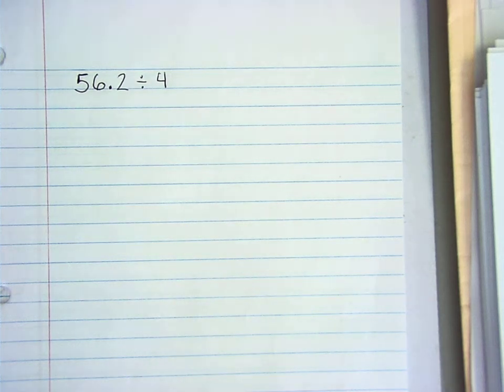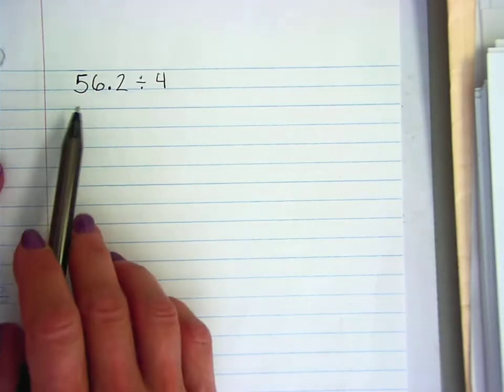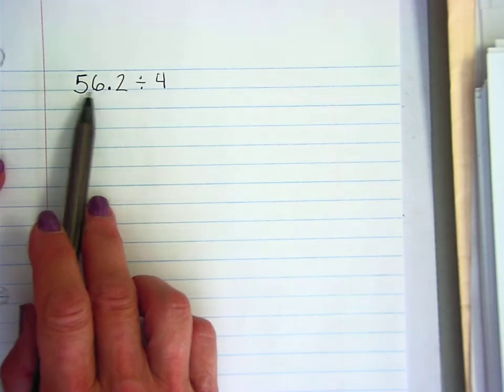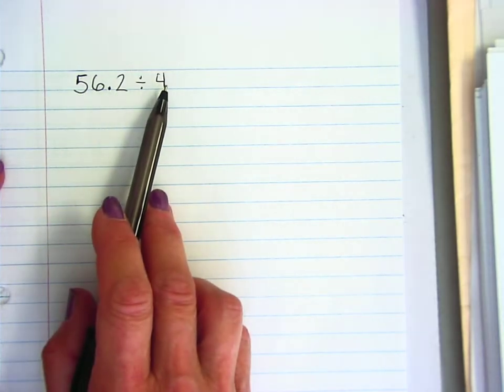Today, I'm going to demonstrate how to use the box method to divide a decimal number. Our division problem is 56.2 divided by 4.